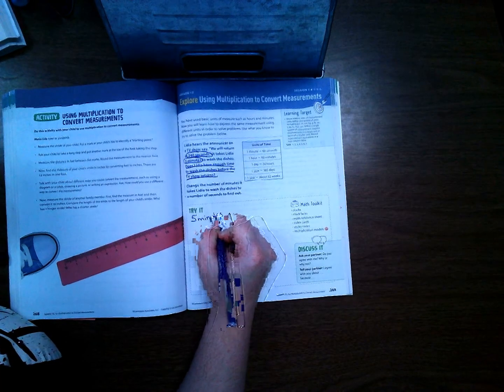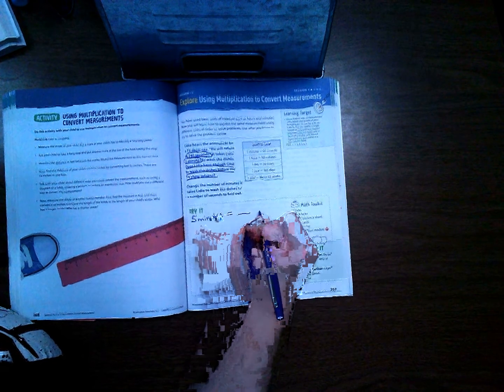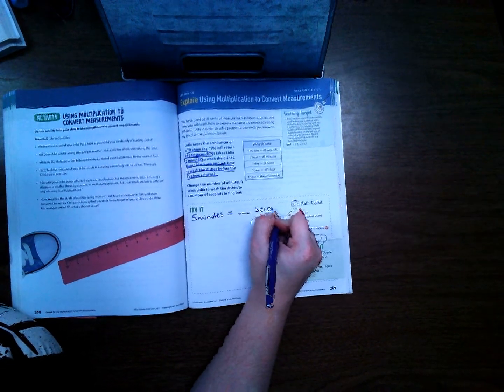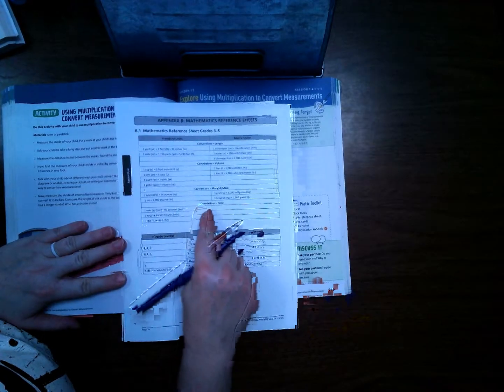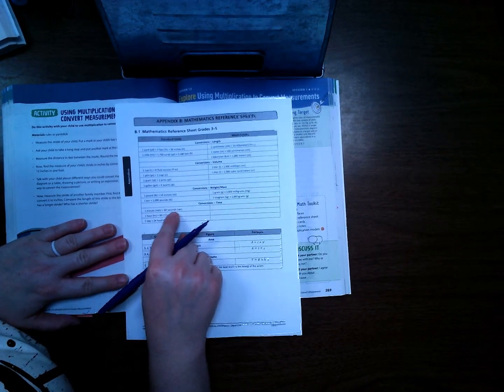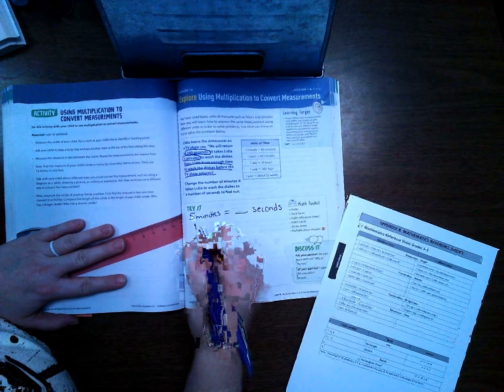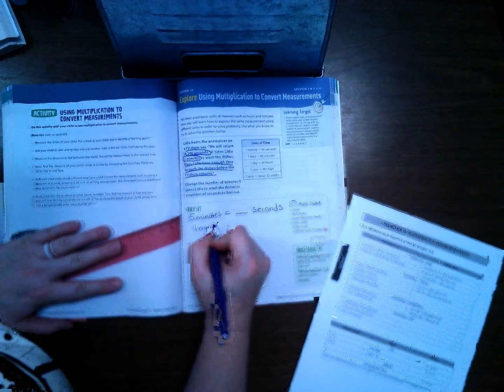So we want to convert five minutes into seconds. So we're going to convert five minutes into how many seconds. Well, if I get this out right here, I'm going to look at my conversion for time, and one minute there's 60 seconds. So I'm going to write there one minute equals 60 seconds.